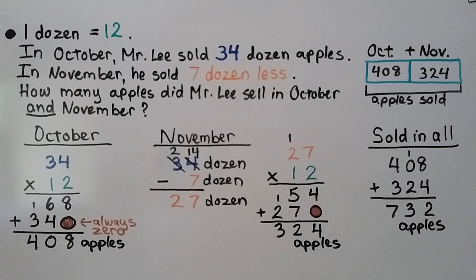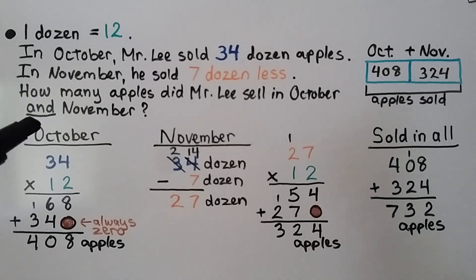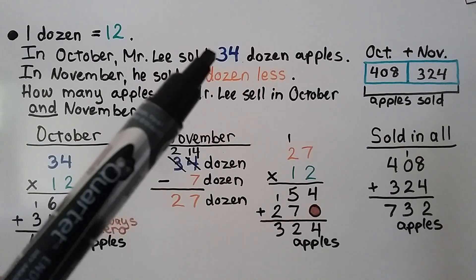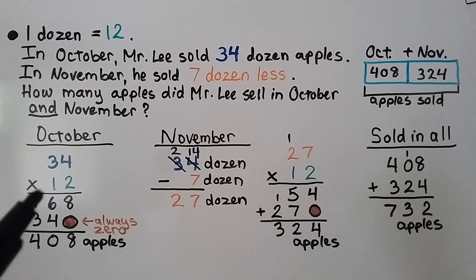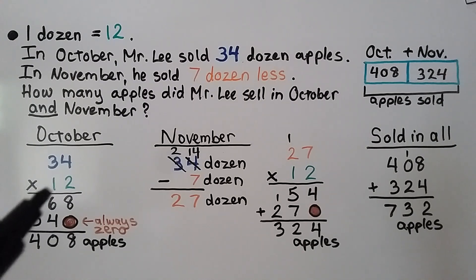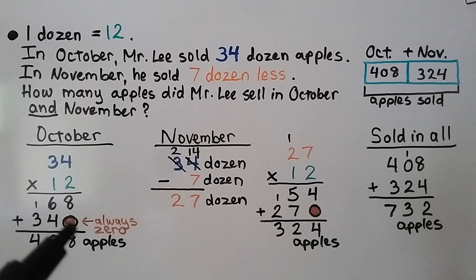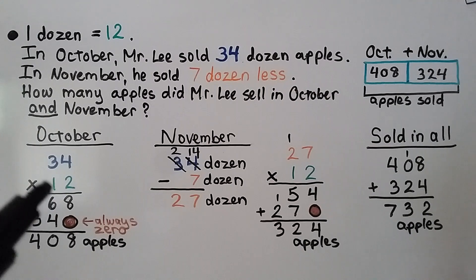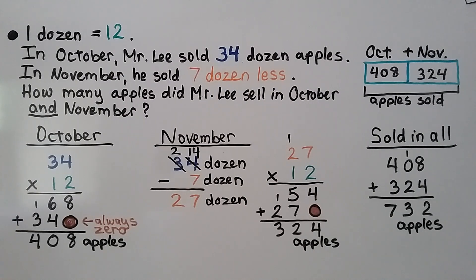One dozen equals 12. In October, Mr. Lee sold 34 dozen apples. In November, he sold 7 dozen less. How many apples did Mr. Lee sell in October and November? We need to find October: 12 in a dozen times 34 dozen, so we do 34 times 12. We have 2 times 4 is 8, and 2 times 3 is 6 — or think of it as 2 times 34, giving 68. That row always ends with 0. Then 1 ten times 4 is 4 tens, and 1 ten times 3 tens is 3 tens. We add partial products and get 408 apples for October.